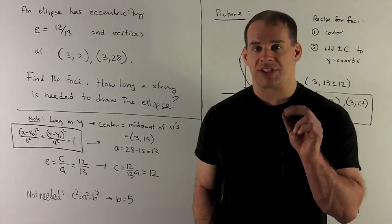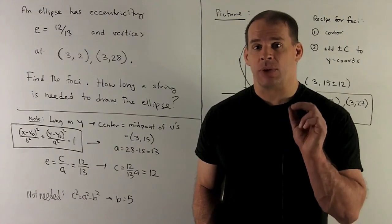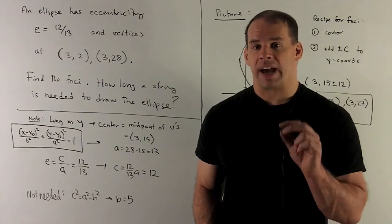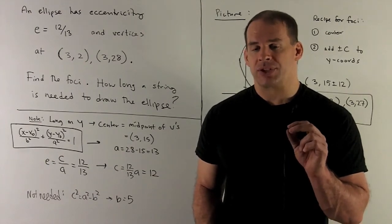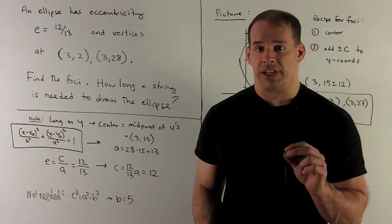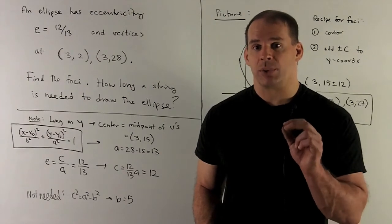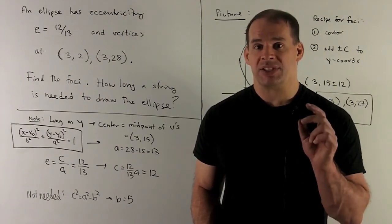Now note, we have the eccentricity, that's equal to c divided by a. That's going to be equal to 12/13. Since I know a is equal to 13, that gives me c equal to 12.